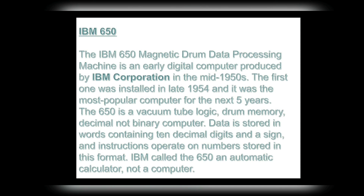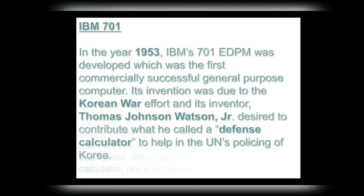Number four: IBM 650 — the IBM 650 Magnetic Drum Data Processing Machine — is an early digital computer produced by IBM Corporation in the mid-1950s. The first one was installed in late 1954 and it was the most popular computer for the next five years. The 650 is a vacuum tube, drum-memory, decimal (not binary) computer; data is stored in words containing 10 decimal digits and a sign. IBM called the 650 an automatic calculator, not a computer.